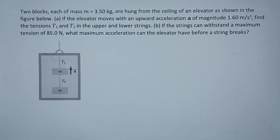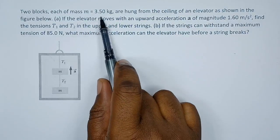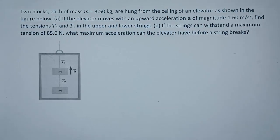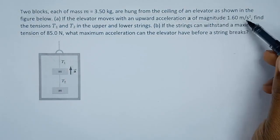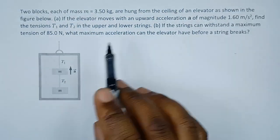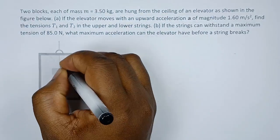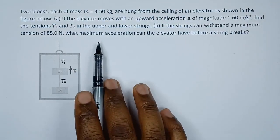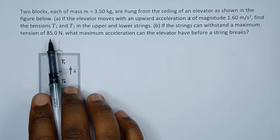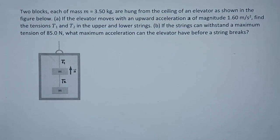We have this question — let's break it down. Two blocks, each of mass 3.5 kilograms, are hanging from the ceiling of an elevator as shown in the figure. The elevator moves with an upward acceleration of 1.6 meters per second squared. Find the tension T1 and T2. Also, if the string can withstand a maximum tension, what is the maximum acceleration the elevator can have when the string breaks?